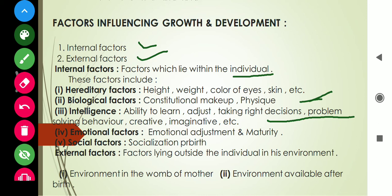The fourth point is emotional factors, which includes emotional adjustment and maturity. The fifth point is social factors, which includes the socialization process. These were the internal factors.